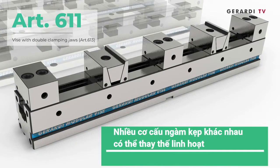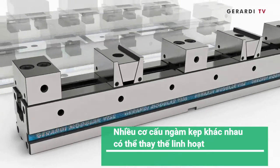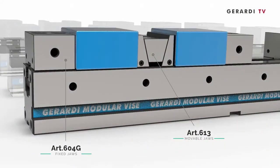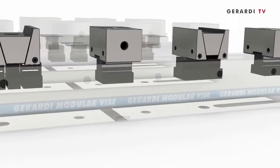Article 611 with double clamping jaws, to clamp simultaneously multiple workpieces on vise base or raised up with barrels.